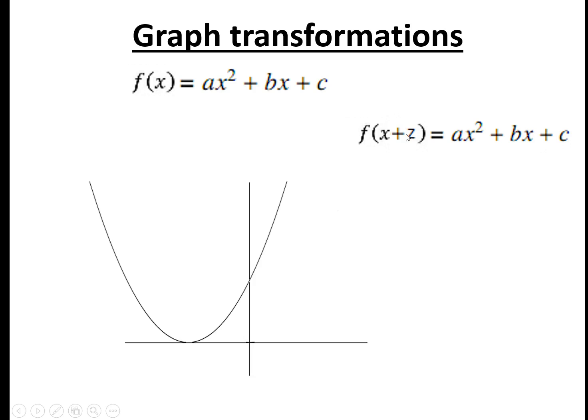If you do f of x plus z, then you move it to the left by a distance z. And again, you can check this by subbing in x plus z instead of x into the equation and then checking where your x squared graph crosses the x-axis. And you'll see each time the intersection points will have moved along to the left by a distance z.